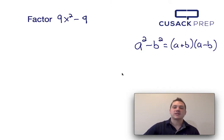Now when I go to factor this, I first recognize that 9x squared and 9 are both perfect squares. Because they're both perfect squares, I know that I can factor them using the difference of squares equation, which I presented over here on the right-hand side.